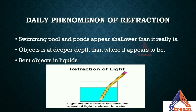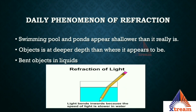Daily phenomena of refraction include: swimming pools and ponds appearing shallower than they really are — the ground appears shallow but when you enter you find it is very deep; objects appearing bent in liquids, as with a pencil in water. The frequency of the refracted ray remains constant, but due to partial reflection and absorption at the boundary, the intensity of the refracted ray is less than the incident ray. When light crosses the boundary between two media, a change in wavelength and speed occurs, which is the main cause of refraction.